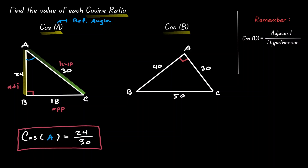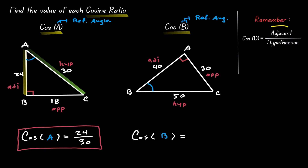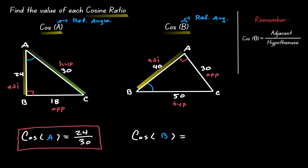In the triangle on the right, we want to find cosine of B. We make B our reference angle and label the triangle accordingly. Using our cosine function evaluated at angle B, the result is adjacent over hypotenuse, where the adjacent is 40 and the hypotenuse is 50.